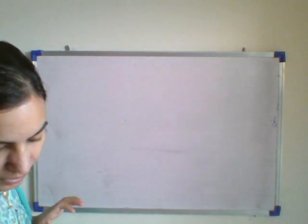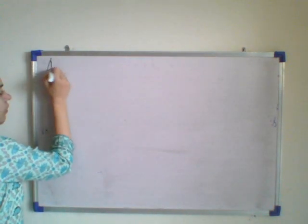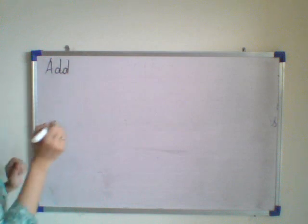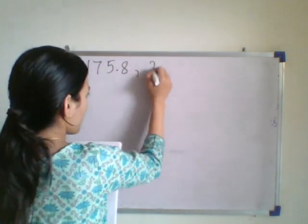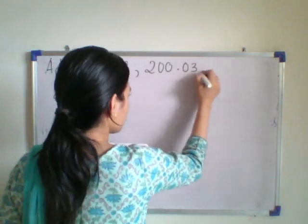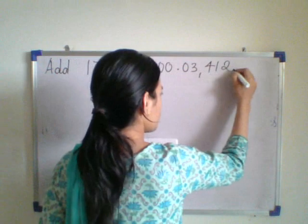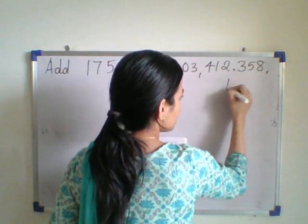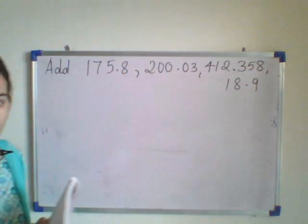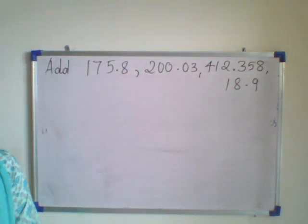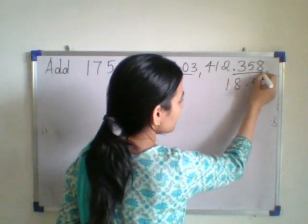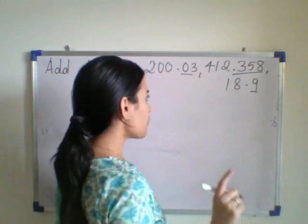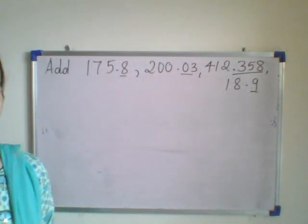Now the next example: 1 comma 412.358 and 18.9 — you have to add all these numbers. First you can see here: after the decimal, one number has 1 digit, another has 2 digits, another has 3 digits, and another has 1 digit. So first of all we have to convert them into like decimals.